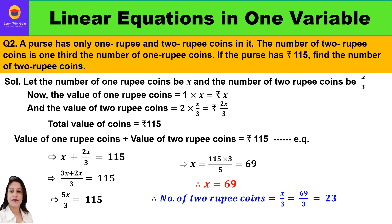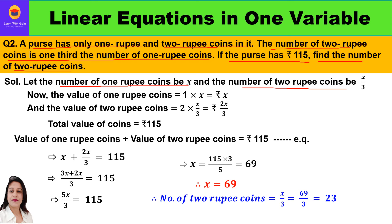Now let us take up the second question. A purse has only 1 rupee and 2 rupee coins in it. The number of 2 rupee coins is one-third the number of 1 rupee coins. If the purse has 115 rupees, find the number of 2 rupee coins. Let the number of 1 rupee coins be x, so the number of 2 rupee coins will be x by 3.